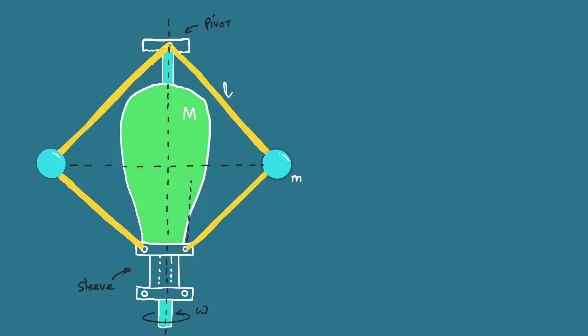When the sleeve goes up, the balls also go up with the same displacement. So the objective, as in the Watt governor, is to derive the relative distance between the ball and the pivot.